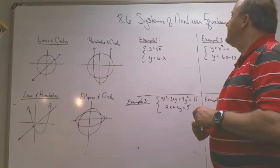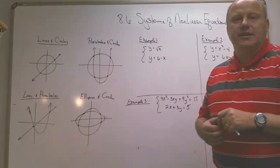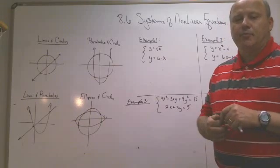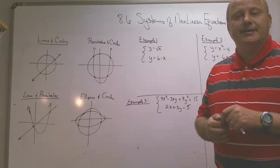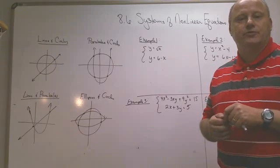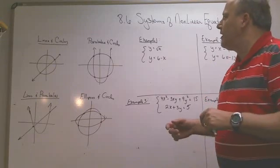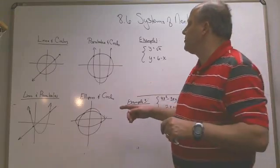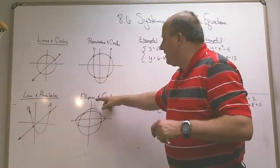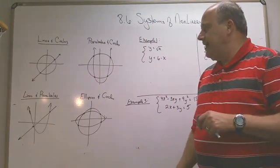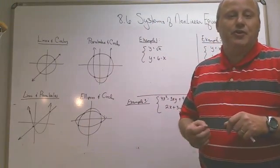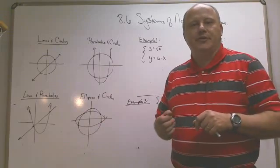Hi, here we are on Section 8.6, Systems of Non-Linear Equations. This is kind of like the 8.1 section except they're not just lines. These can be lines, but they could also be circles with parabolas. You can actually try to figure out the point of intersections with ellipses and circles, and sometimes you're not even going to know what type of equation you're dealing with.